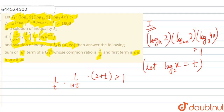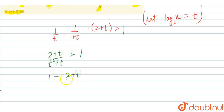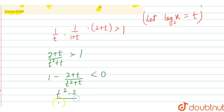Then after simplification, taking LCM, we get (2+t)/(t²+t) greater than 1. Then after rearranging: 1 − (2+t)/(t²+t) less than 0 by changing sides. After taking LCM it becomes (t²−2) / (t(t+1)) less than 0.